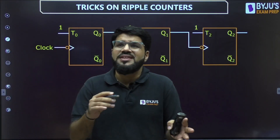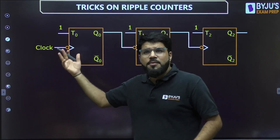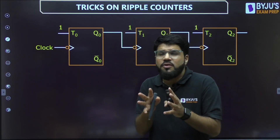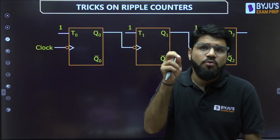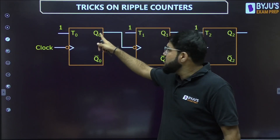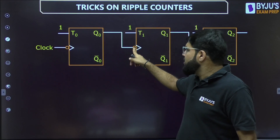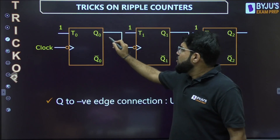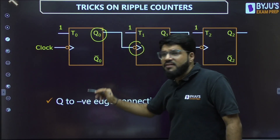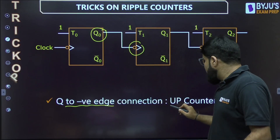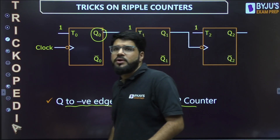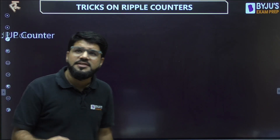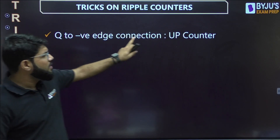Now we need to determine the state sequence — whether it is an up counter or down counter. We are talking about a trick here. Look into the connection: whether the clock connection is from Q or Q-bar, and whether it is positive or negative edge triggered. The condition here is Q to negative edge. Whenever there is a Q-to-negative-edge connection, confirm that it is going to be an up counter.